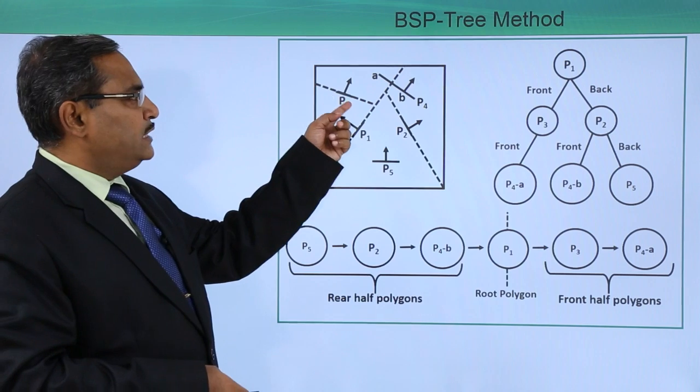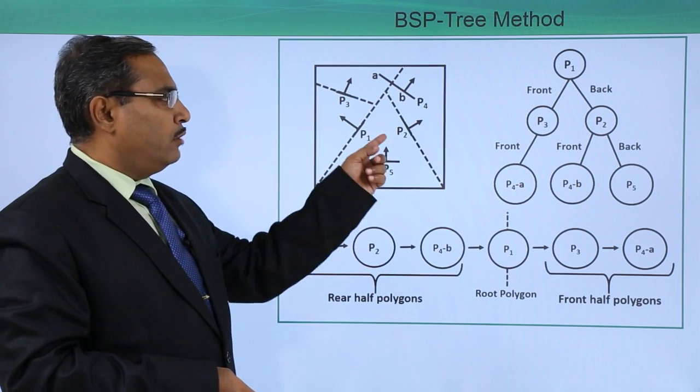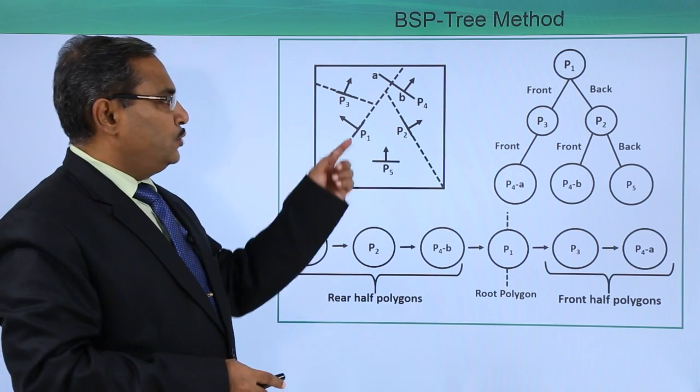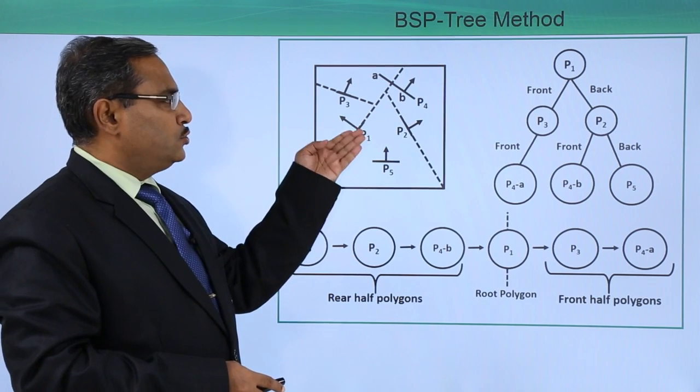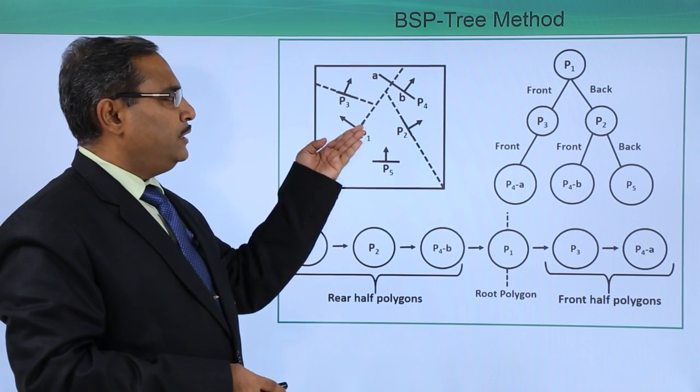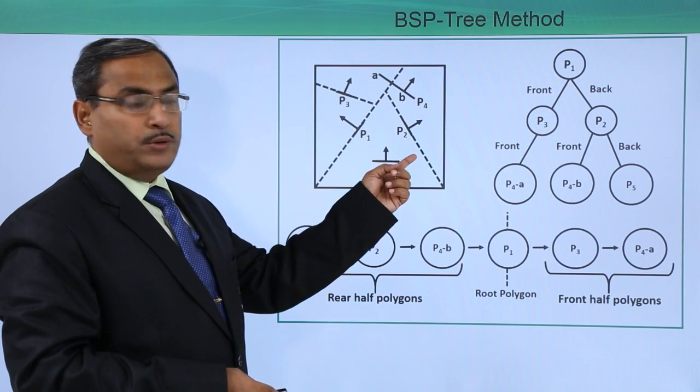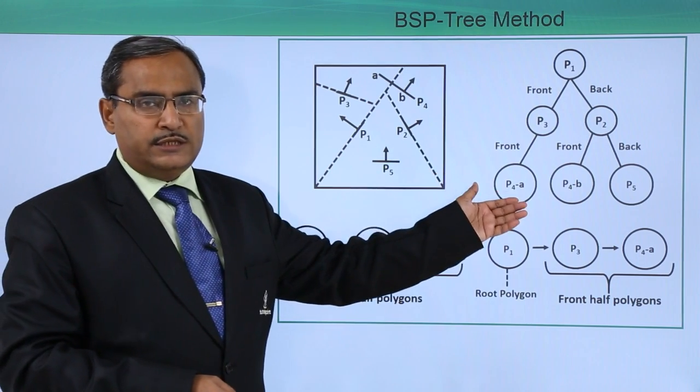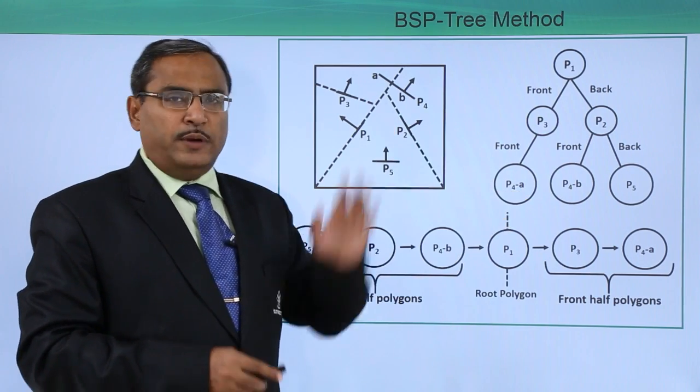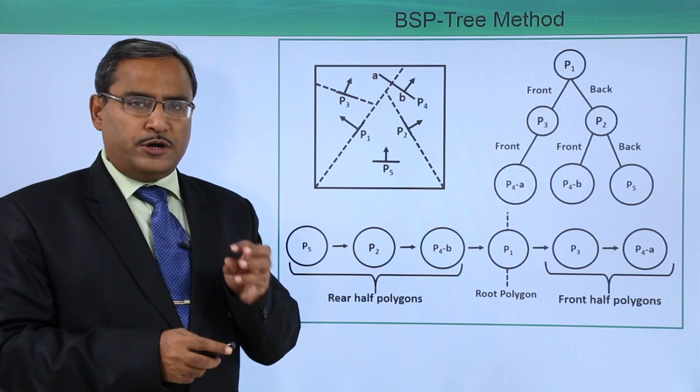Similarly, we have drawn the respective normals on these polygons. If you consider this partition plane, in the front we are getting P3, and in the back we are getting P2. Now let me start constructing this BSP tree. At first, we have taken P1 as the arbitrary root.